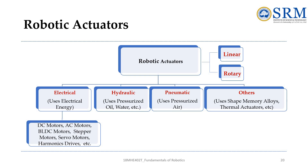An actuator is a device that causes something to happen — often robot movement achieved using motors. Actuators are needed to make the robot's wheels turn, the joints of a robot arm rotate, or a robot gripper open or close. Actuators can also indicate what the robot is doing, such as a light being turned on, sound emitted through a loudspeaker, communication via a transmitter, or displaying data on an LCD screen.